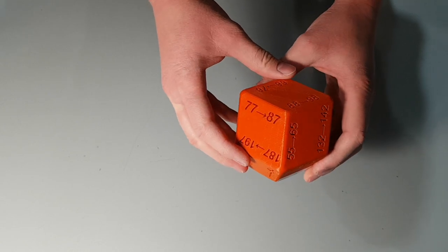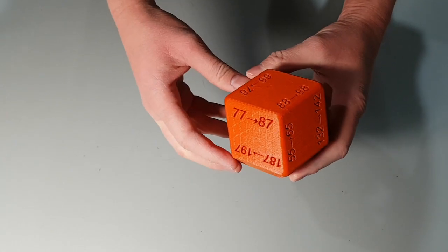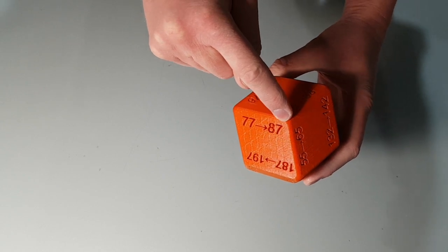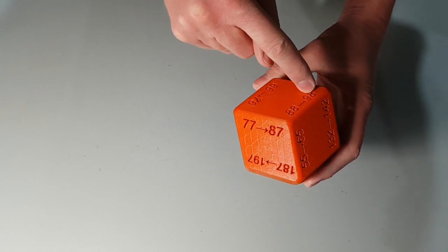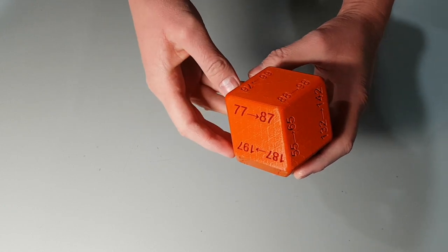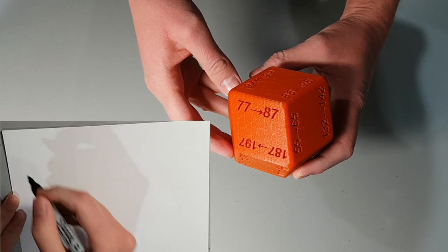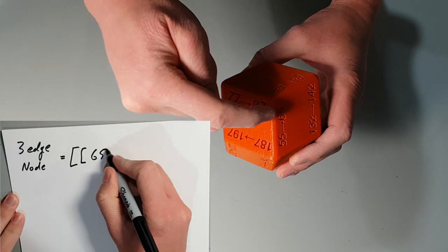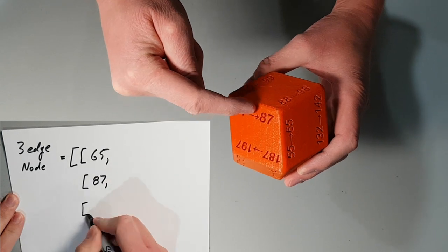Let's look at the three edge nodes first. A streak of light traveling from 77 to 87 will have two options once it reaches the node: turn left and go down 88 to 98, or turn right and go from 65 to 55. To encode the information about this node, I am going to create a simple array. Starting at LED 65 and going clockwise around, we get 65, 87, 88.